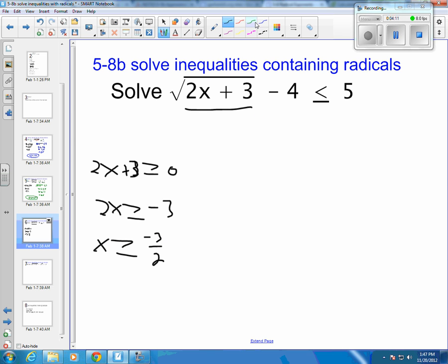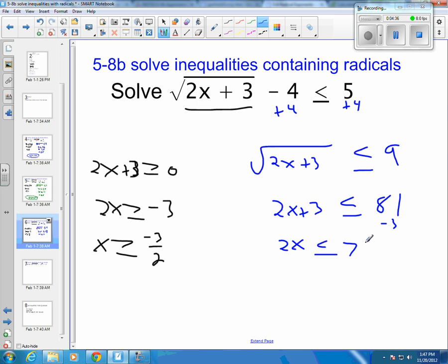And then you need to solve the whole thing, so you're going to add 4 to both sides, and you get the square root of 2x plus 3 is less than or equal to 9. Then you square both sides, so 2x plus 3 is less than or equal to 81. Then you subtract 3 from both sides, so 2x is less than or equal to 78.